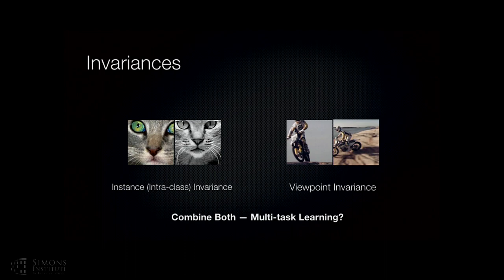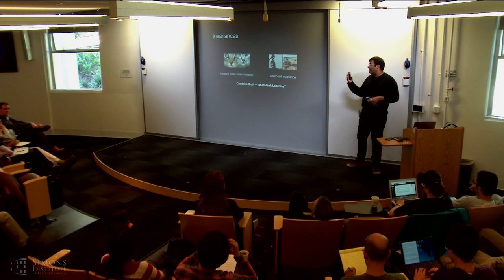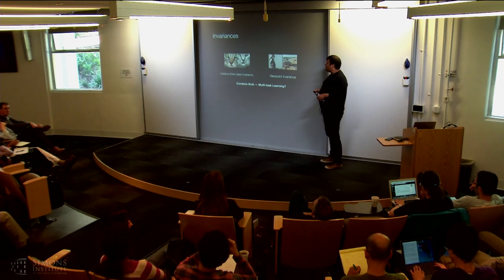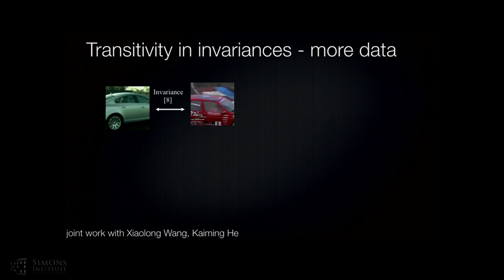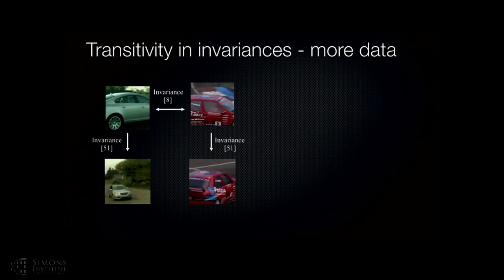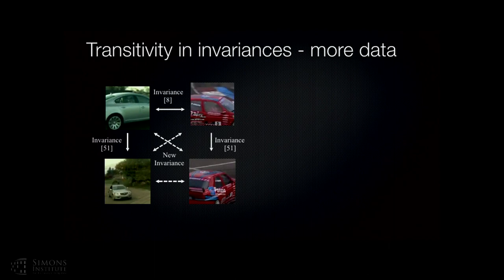Multitask learning for this doesn't work because a network can't differentiate at what layer each type of invariance should be learned. So we combined the approaches in the data space. We took lots of videos, used the layout prediction to find the closest patches — for example, a car patch turns out to be closest to another car patch using the layout approach. Once we know two patches are similar, we track them inside videos to get completely different viewpoints of the same car. Then we do simple transitivity in the graph — loop closures — finding new invariances. We sample more pairs of patches using this approach.